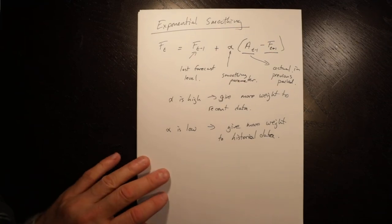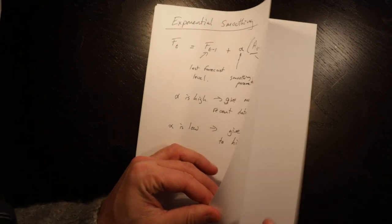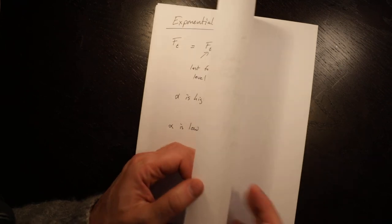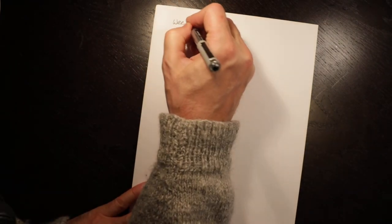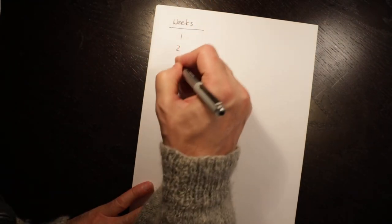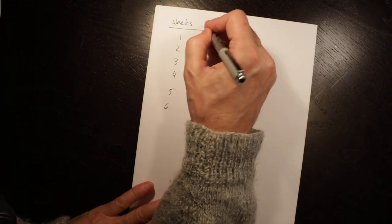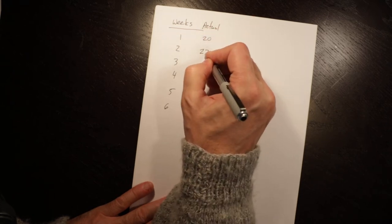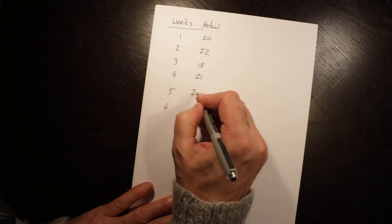Let's show how to apply that. We're going to go back to this data: weeks one, two, three, four, five, six. This is actual: twenty, twenty, twenty-two, eighteen, twenty-one, twenty-two.